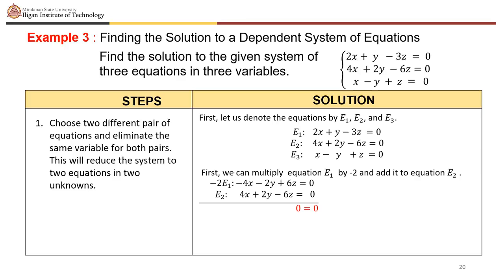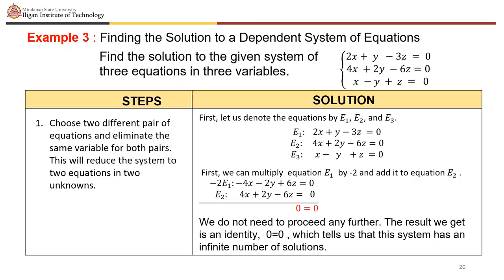Multiply e sub 1 by negative 2 and add it to e sub 2. Since negative 2 times e sub 1 gives minus 4x minus 2y plus 6z equals 0, and e sub 2 is 4x plus 2y minus 6z equals 0, adding them gives 0 equals 0. We do not need to proceed any further — the result is an identity, which tells us this system has an infinite number of solutions.